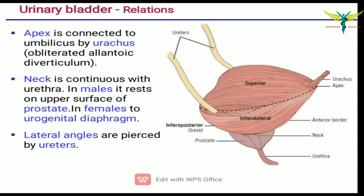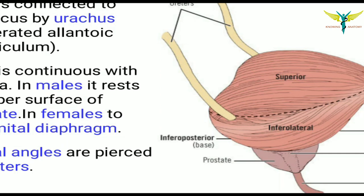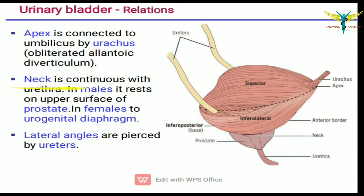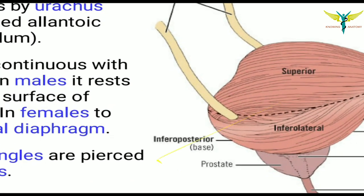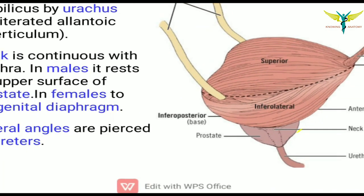Coming to the relations of the urinary bladder: the apex is connected to the umbilicus by the urachus. The neck is continuous with the urethra. In males it rests on the upper surface of the prostate, and in females it rests on the urogenital diaphragm.